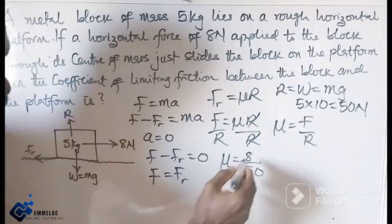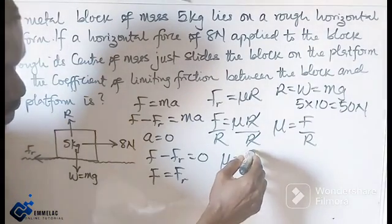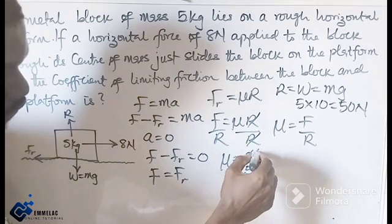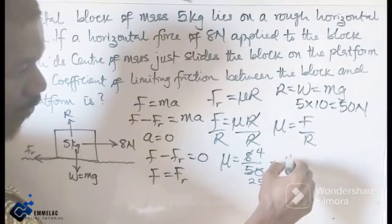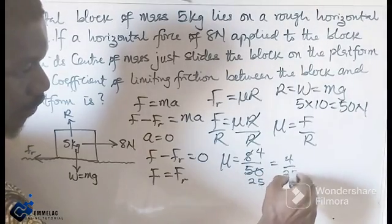You can just divide through, 2 goes into 8 four times, 2 goes into 50 twenty-five times. So here we have 4 over 25.